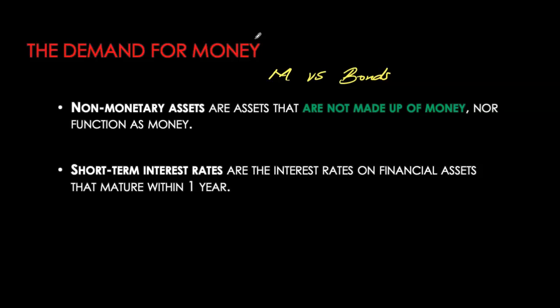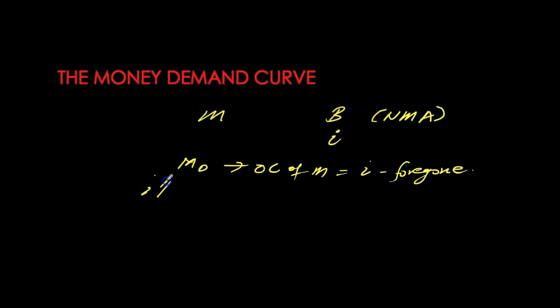Why do we hold money when there's an alternative asset that gives us interest income? People primarily hold money because of its liquidity — it is the most liquid asset in our portfolio of wealth. That's why we always hold some wealth in the form of cash balances or nominal money balances. Whenever we choose to hold money, we face a trade-off: we let go of the interest we could have earned, and that interest becomes the opportunity cost of holding money.